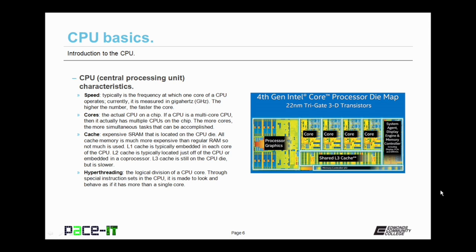Now let's move on to hyperthreading. Hyperthreading is the logical division of a CPU core. Through special instruction sets, the CPU is made to look and behave as if it had more than a single core. So you could have a two-core processor that had hyperthreading and it would actually behave like it was a four-core processor.